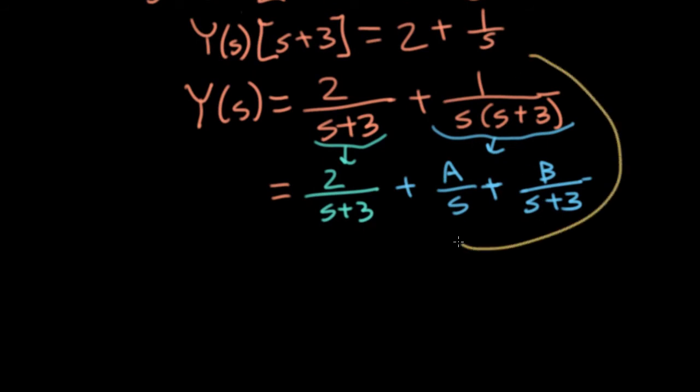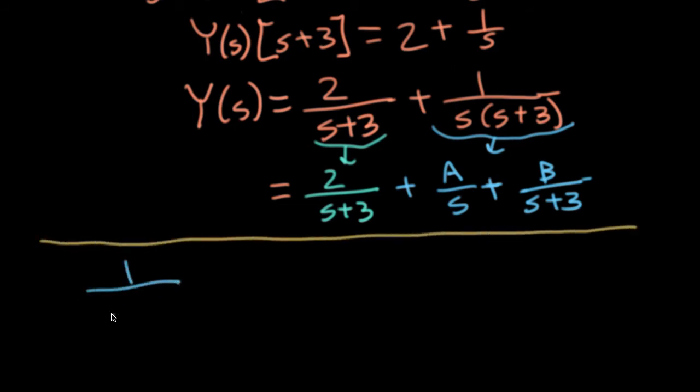So now in this partial fraction expansion, I need to figure out what the terms A and B are. Let me write that as a separate thing. So 1 over s(s plus 3) equals A over s plus B over s plus 3.